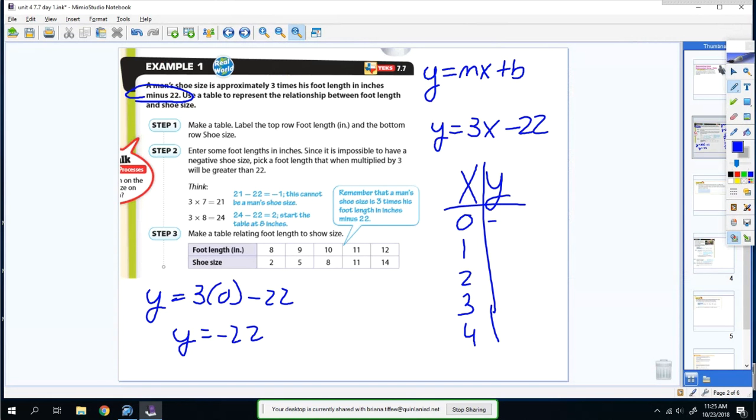Then you do the 1, so you do y = 3 times 1 minus 22, which is negative 19. And you continue on, but you can see from this point on it's changing by 3, because that's what the constant is.